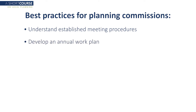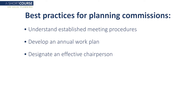Planning commissions typically work with staff and elected officials to create an annual work plan, and each local community will have a different process for this. Once complete, your work plan should be made publicly available — if you have a web page, post it there. An effective chairperson is very important to ensure the meeting goes smoothly. He or she works with professional staff in advance of each meeting to build the agenda and consider any special procedures needed. An effective planning commissioner should come to each meeting prepared, so read your packet before you get there.